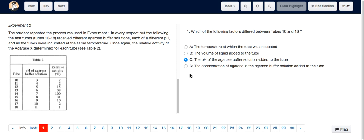Just to be clear, we can eliminate the other options. It says in the description that the tubes were incubated at the same temperature, so it's definitely not A. The volume of liquid added to the tube and the concentration of agarose in the agarose buffer solution—both are factors that aren't mentioned in the experiment at all. So the answer is C.